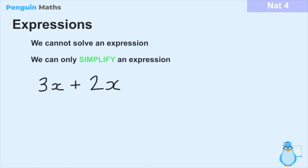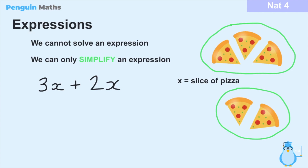Let's take the expression 3x plus 2x as an example. When we have an expression like this we can imagine x to be anything we want. Let's imagine our penguin friends are hunting and they come across slices of pizza — so x is a slice of pizza. We have three slices here and two other slices. If x represents a slice of pizza, we're adding three slices to two slices, which equals five slices. In other words, 3x plus 2x equals 5x. If the variable is the same, we just add the numbers before them: 3 plus 2 gives us 5x.